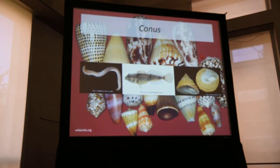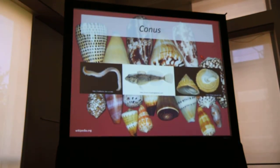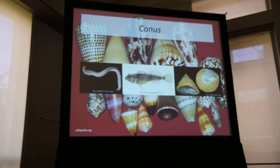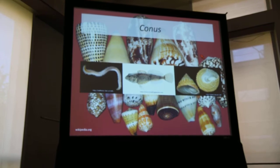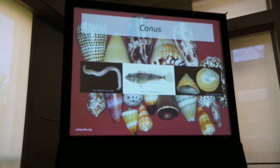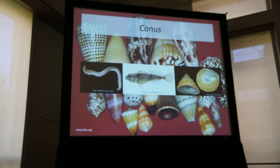My study system is a genus of predatory marine gastropod called Conus. The genus includes some 700 species of snails, and they are distributed throughout the tropics worldwide. This makes them the most diverse genus of marine metazoans that we know of.